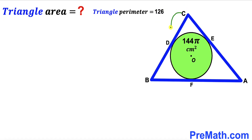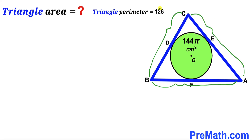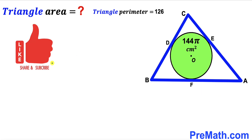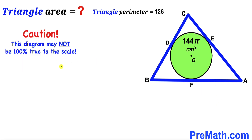In other words, the sum of all three side lengths of this triangle is 126 centimeter, and our task is to calculate the area of this blue triangle ABC. Please don't forget to give a thumbs up and subscribe, and keep in mind that this figure may not be 100% true to scale.